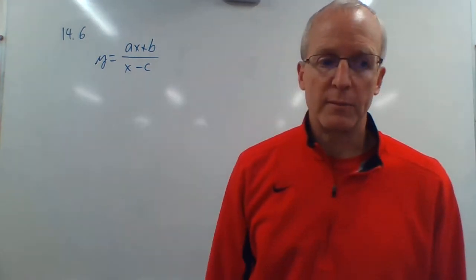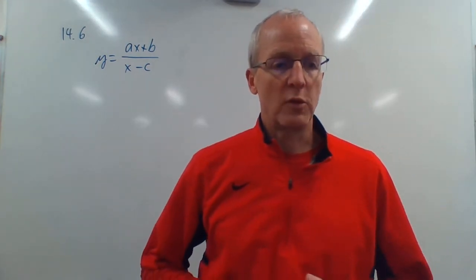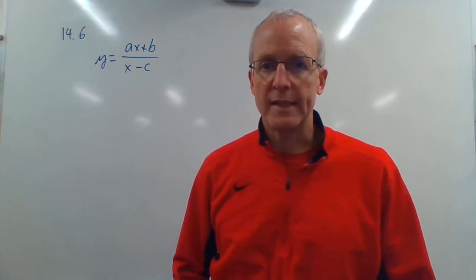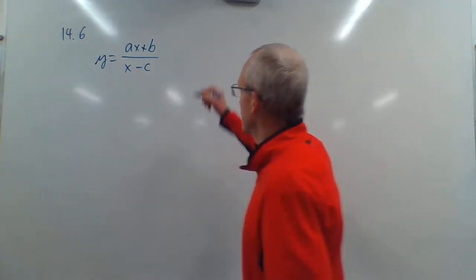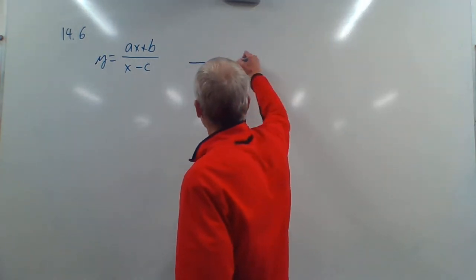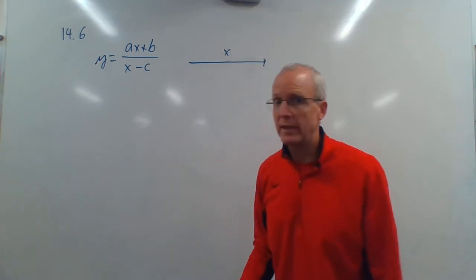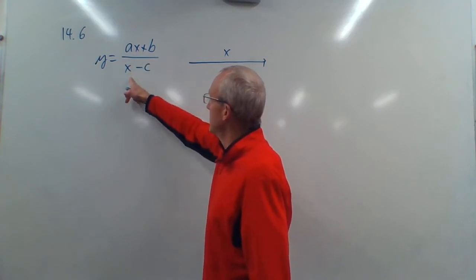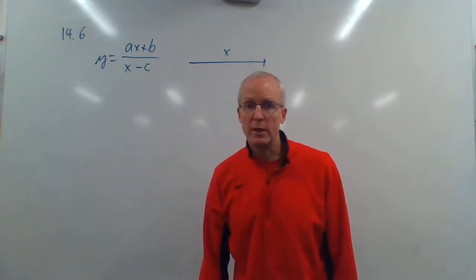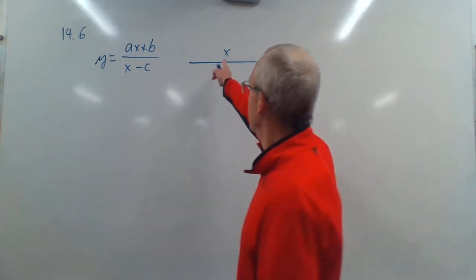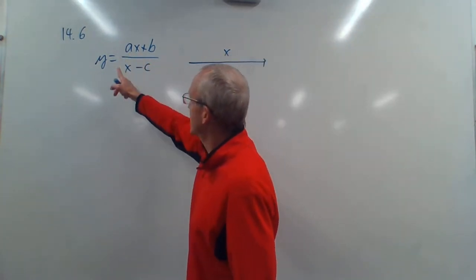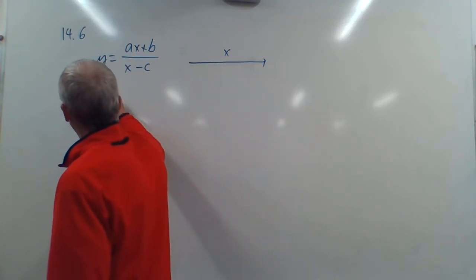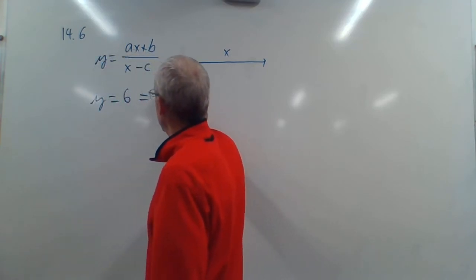And 14.6 is easier than 14.5 because they give you the horizontal asymptote. They're saying the horizontal asymptote is Y equals 6. The horizontal asymptote means as X gets really, really big, what does Y go towards? And they say it goes to 6. Remember, if you look at our formula here, when X gets really, really big, B and C don't matter anymore. No matter how big they are, we can make X bigger. So all that matters is that AX over X, and then the X's cancel, and we're left with A.